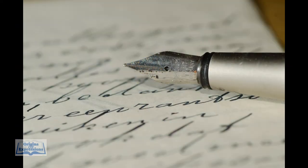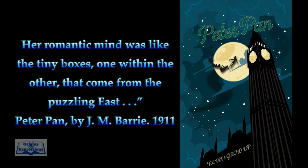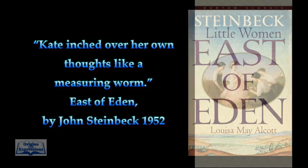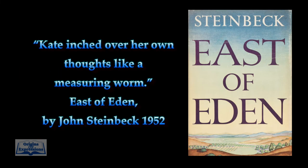There are many famous works that use similes. A few examples are: her romantic mind was like the tiny boxes, one within the other, that come from the puzzling east. She tries to get rid of the kitten, which had scrambled up her back and stuck like a burr, just out of reach. Kate inched over her own thoughts like a measuring worm.